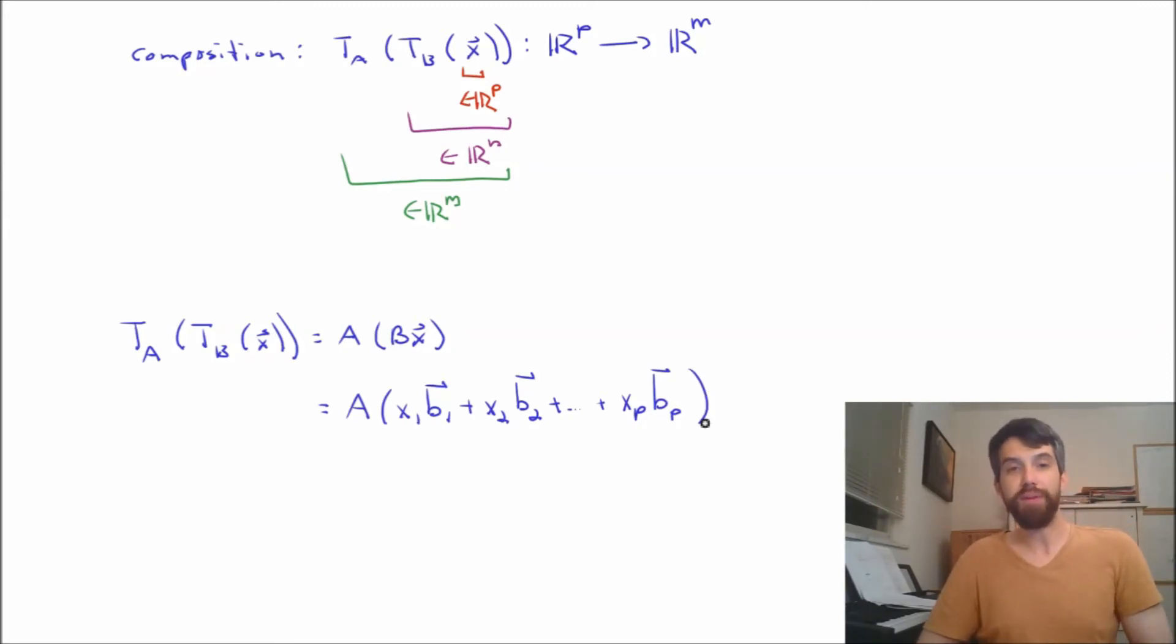Alright, so there we have it. Now, remember, matrices behave in this nice linear way. I'm taking A of a linear combination, so I can break this up. I can use the different algebraic rules that I know, and sort of distribute this matrix A over this particular linear combination.